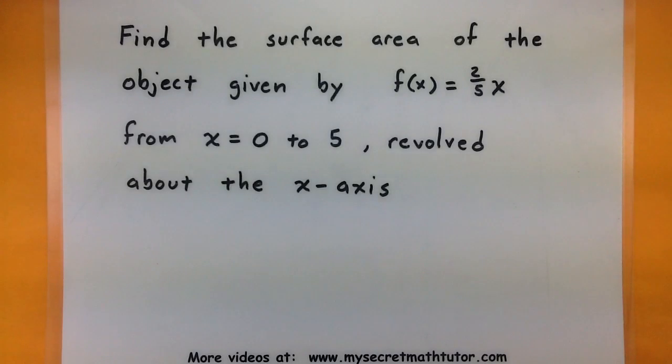If you know about the arc length formula in calculus, a great way that you can expand upon that is to use it to find the surface area of an object when it's been revolved about an axis. In this problem we're going to look at the object created by the function f(x) equals two-fifths x as it goes from zero to five, and we're going to revolve that about the x-axis.